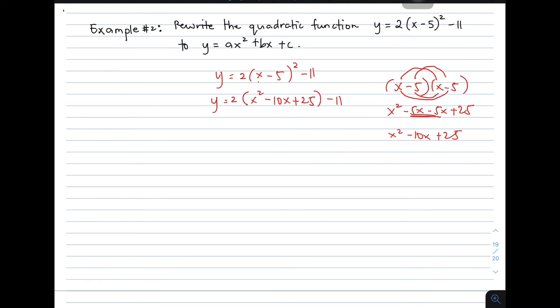They are just the same. As you can see, you still have 2 here outside the parenthesis, meaning you need to distribute or use the distributive property. You have to multiply it by 2. So you have y equals 2x squared, minus 20x, and then 2 times 25 is plus 50 minus 11.